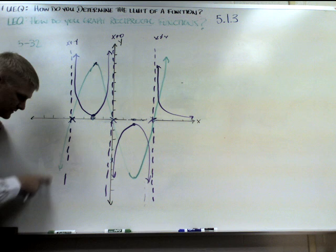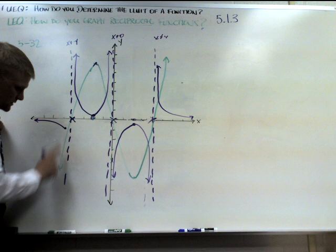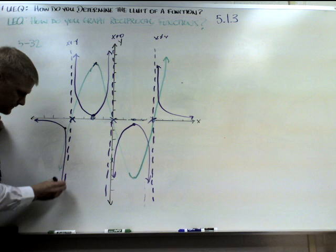Over here, as I leave the asymptote, green is getting what? It's getting bigger. That means purple has to get smaller or closer to 0. As I get closer to the asymptote, green is going to 0, that means purple is going to go to infinity. There is your graph.